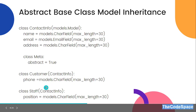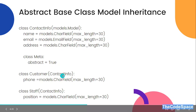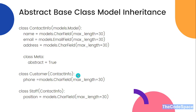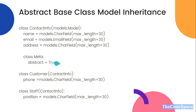As you can see in this example, we have added abstract is equal to true into the parent base class ContactInfo. The Customer and Staff classes are inheriting the ContactInfo class. What will happen is this base class will not get created, and we can't add it into our admin.py file — we can't register it because it is defined as abstract is equal to true.